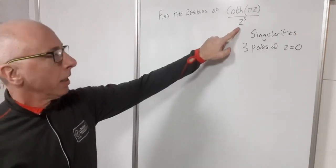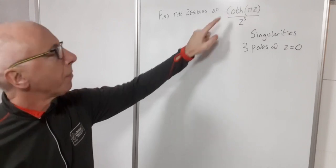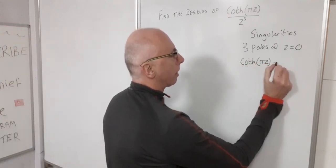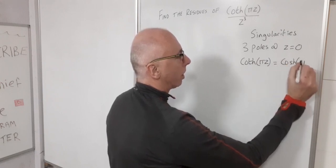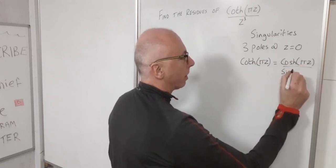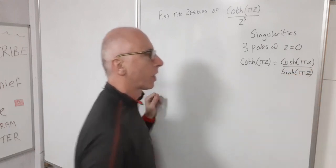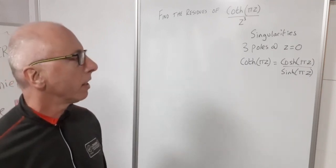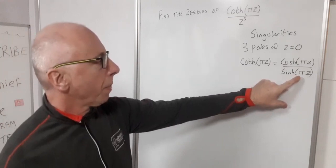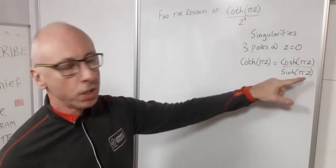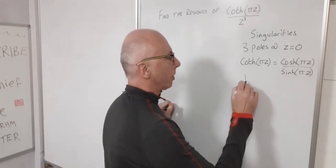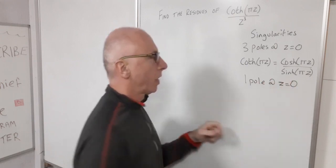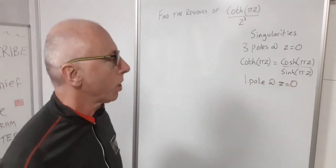So that takes care of our denominator but now let's have a look at our numerator. So the hyperbolic cotangent function of pi z is equivalent to cosh pi z divided by sinh pi z. Now every time this denominator is zero that will also have a singularity. So the sinh function pi z is also zero when z equals zero. So there will be one more pole at z equals zero because sinh pi times zero is also zero.